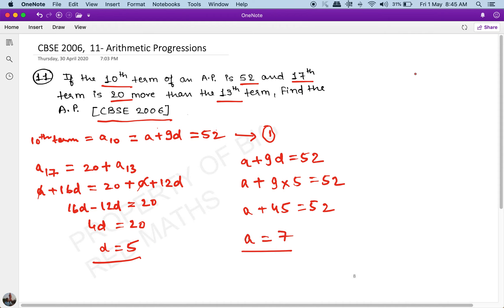So a = 7, d = 5, and we have everything we need to find the AP. The AP will be: 7, 12, 17, 22, 27, and so on.